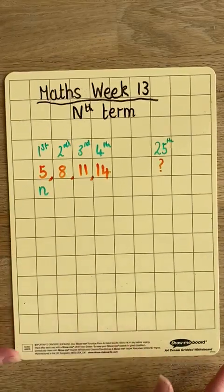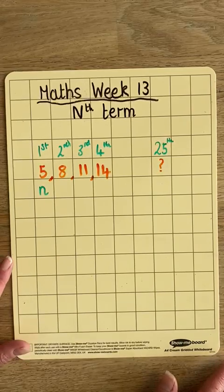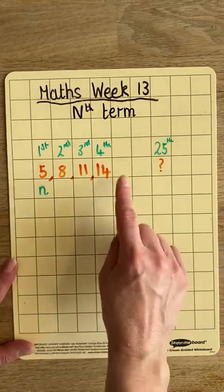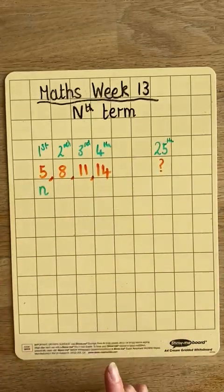Here is the sequence again, 5, 8, 11 and 14. And once again, we have got the first, second, third and fourth term, but we're asked for the 25th term.